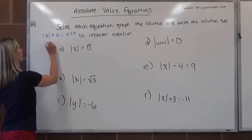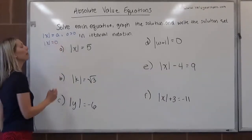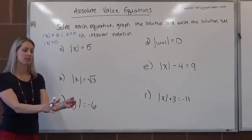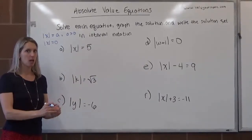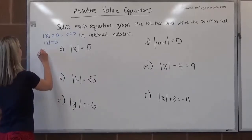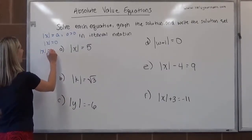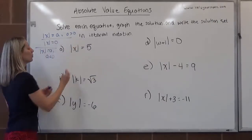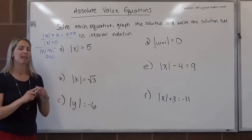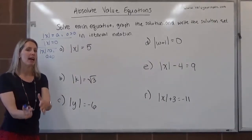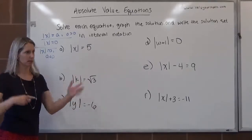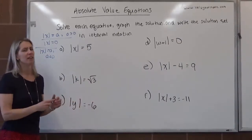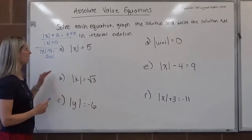If we have the absolute value of x is equal to 0, then there is one case to consider, and that's just whatever's inside the absolute value must equal 0. The third case is the absolute value of x is equal to a, where a is negative. If that's the case, there would be no solution, because we can't take an absolute value and have it equal something negative. Absolute value is non-negative, so that's no solution.